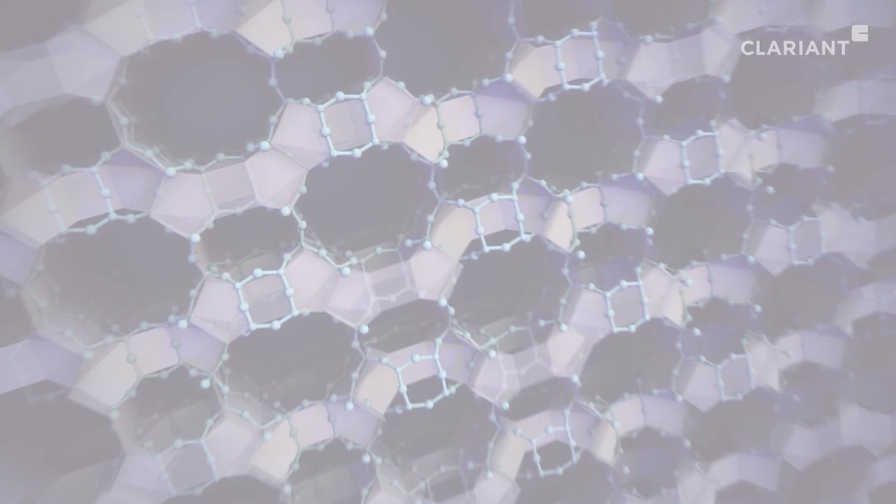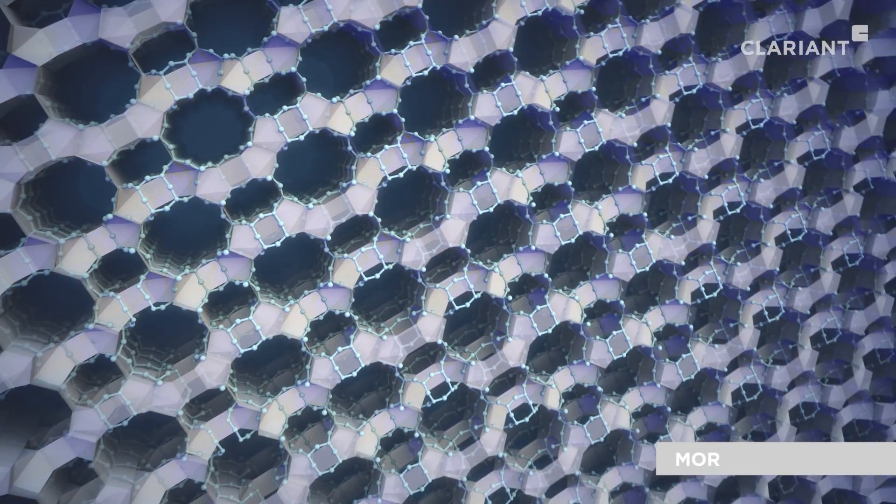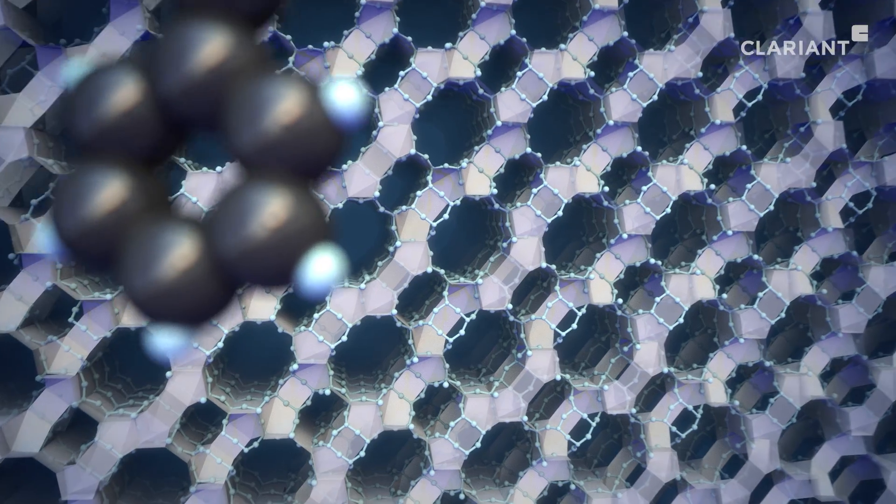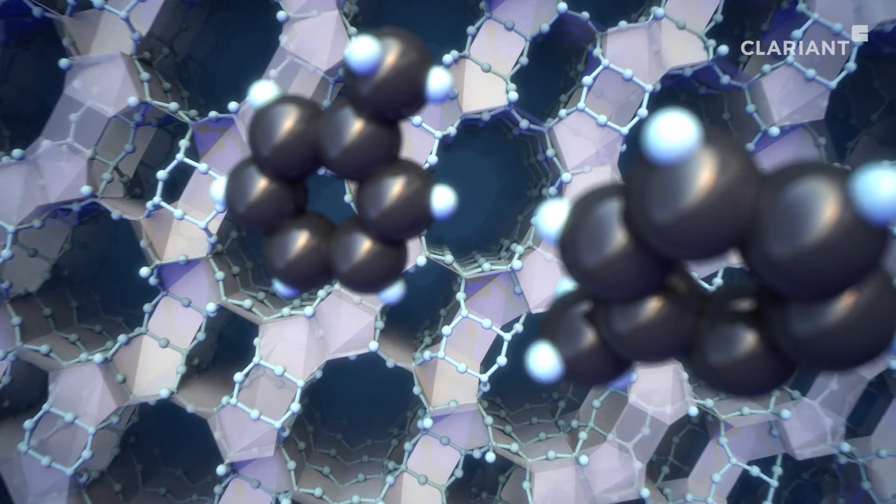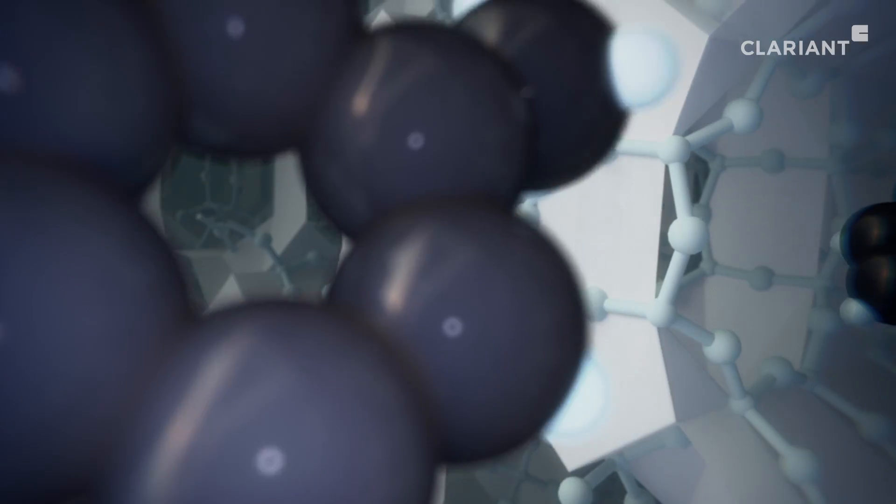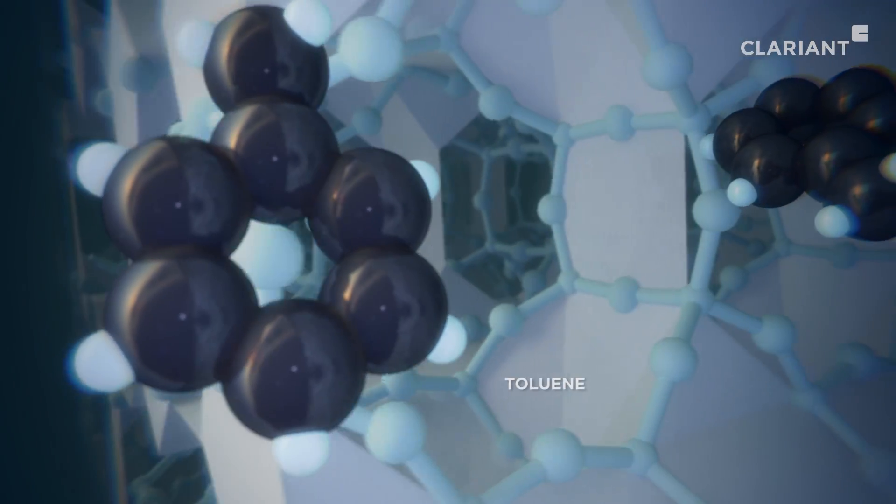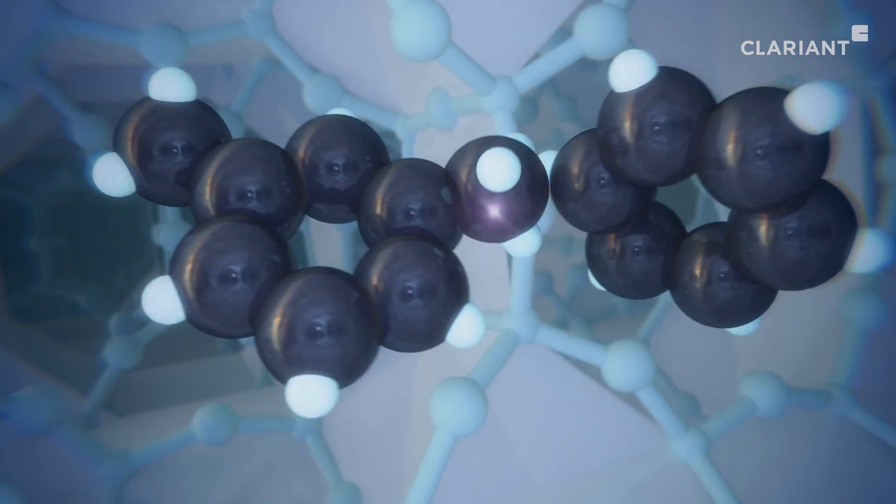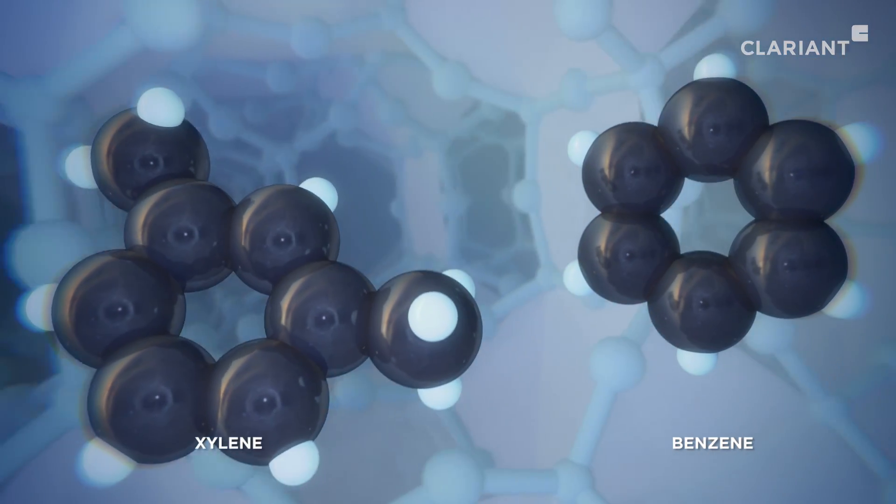Mordenites are important in process catalysis. For example, they can be used to catalyze disproportionation reactions of carbon containing aromatic compounds. Methyl groups of two toluene molecules rearrange in the presence of the catalyst to give one benzene and one xylene molecule.